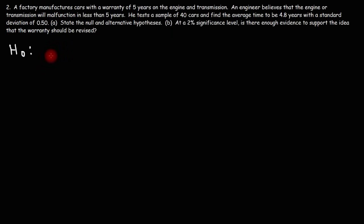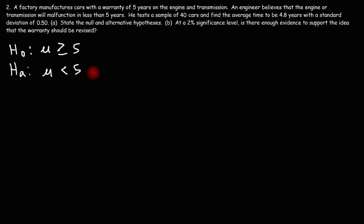For the null hypothesis, the factory's warranty assumes the car will have no issues for five years or more, so the null hypothesis is that mu is greater than or equal to 5 years. The alternative hypothesis reflects the engineer's belief: the mean will be less than 5 years. That's the null and alternative hypotheses for part A.